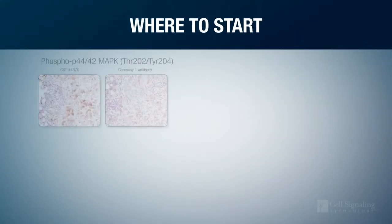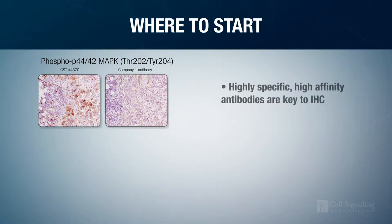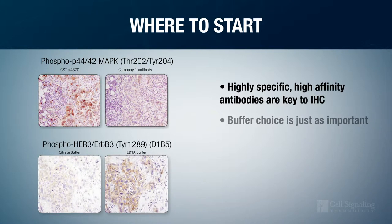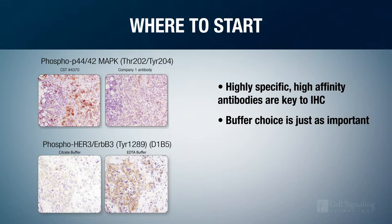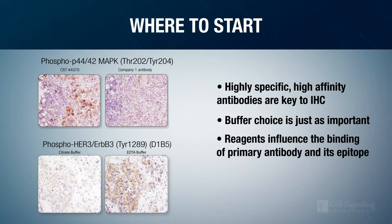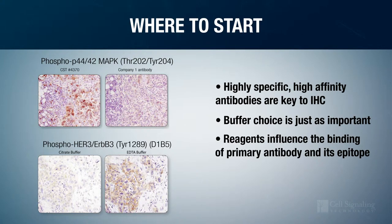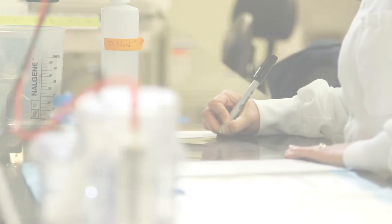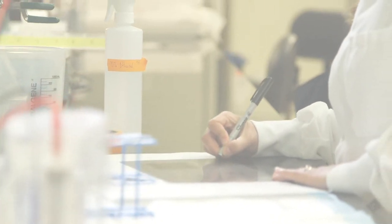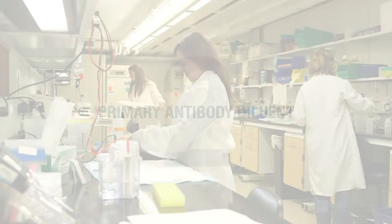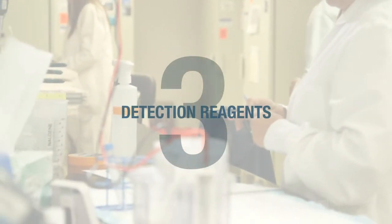You probably know that a highly specific, high-affinity primary antibody is key to a successful IHC. But did you know that the companion reagents, such as buffers, which establish the pH and ionic strength of the system, are just as important? These reagents can influence the binding of the primary antibody to its epitope and dramatically affect the outcome of the assay. To help you pick the best reagents and make sure those Friday nights in the lab are worth the effort, we will spend the next several videos reviewing how companion reagents affect IHC.